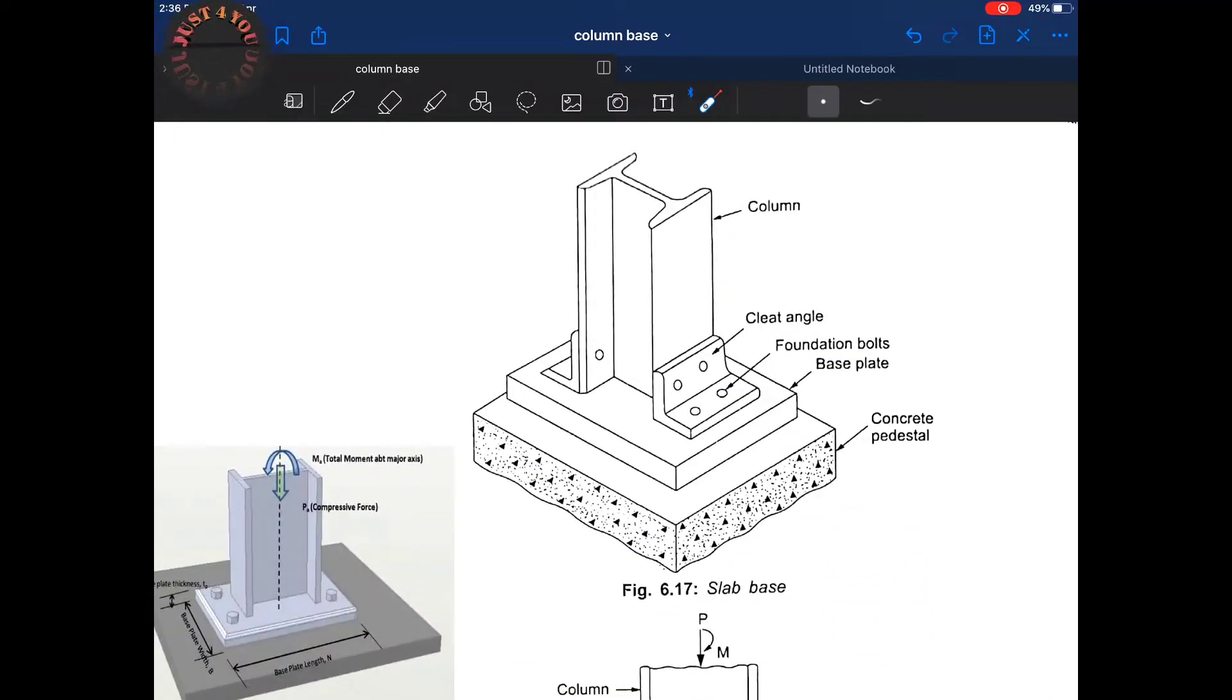This diagram will clear your concepts. Now here is your column base and this is your steel column. So we provide in between a steel plate that is known as base plate or the column base.